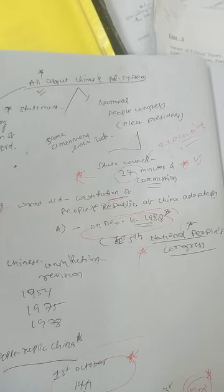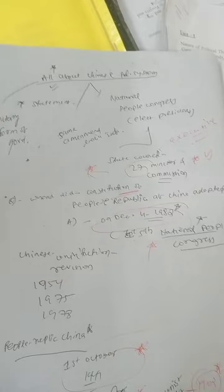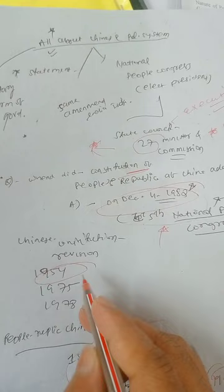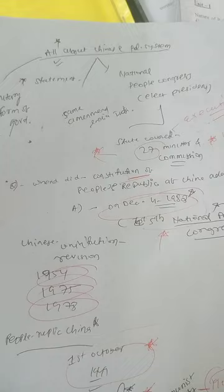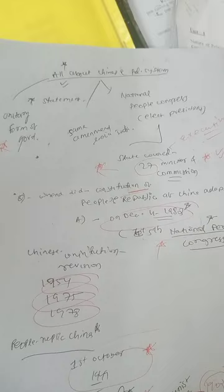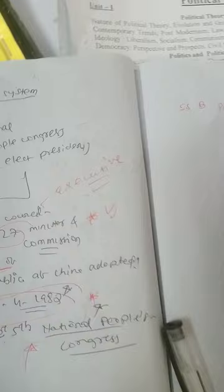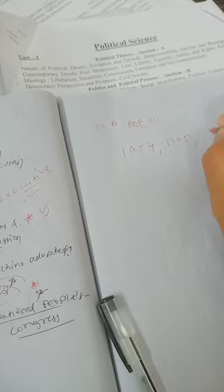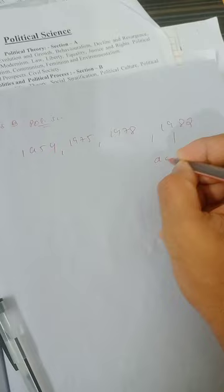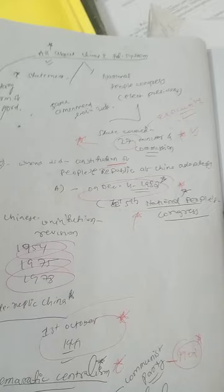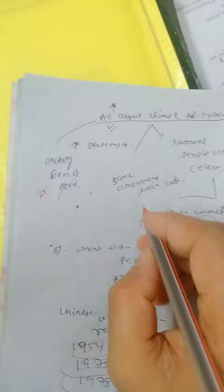The Chinese constitution was revised three times: in 1954, 1975, and 1978, and was finally adopted in 1982. So to summarize: 1954, 1975, 1978 were revisions, and 1982 was the final adoption of the Chinese constitution. Regarding amendments to the Chinese constitution, a two-thirds majority is required — India follows this rule as well.